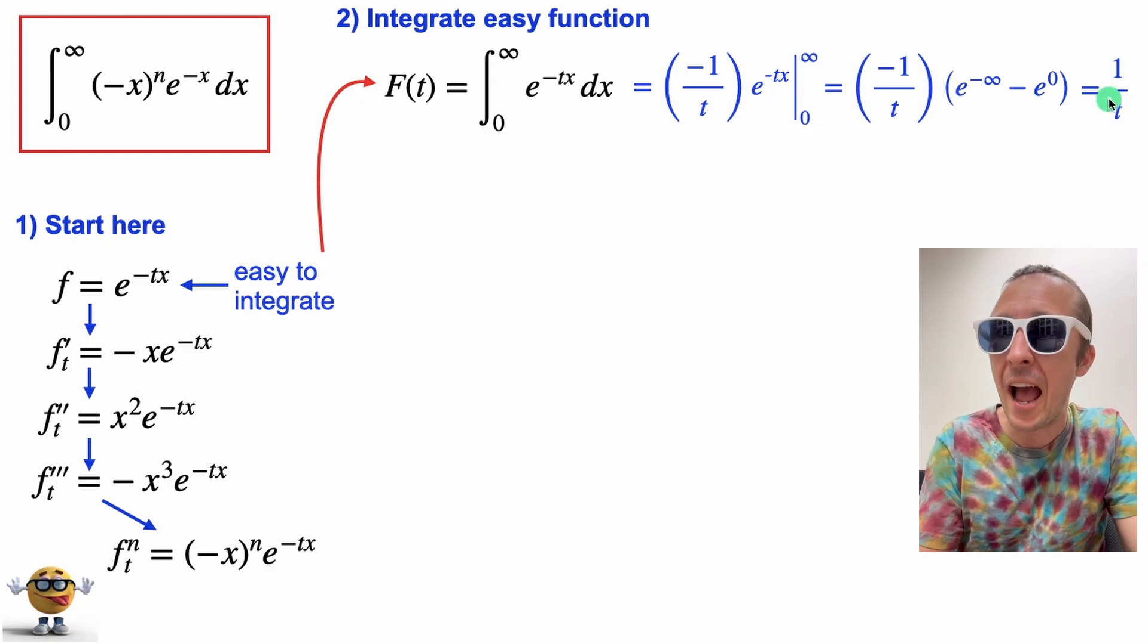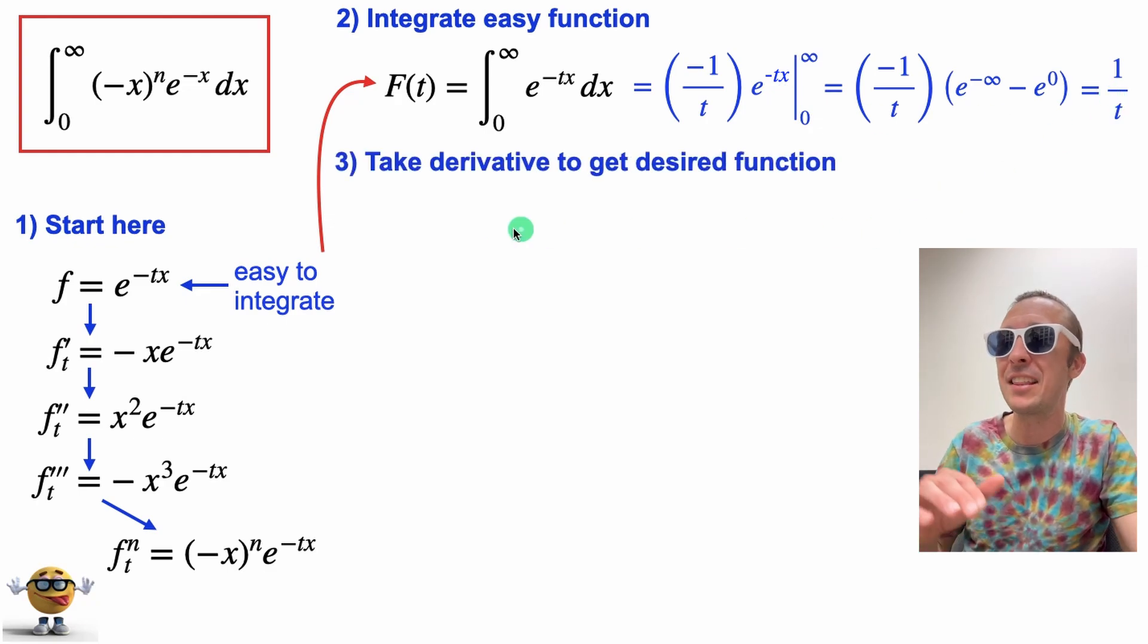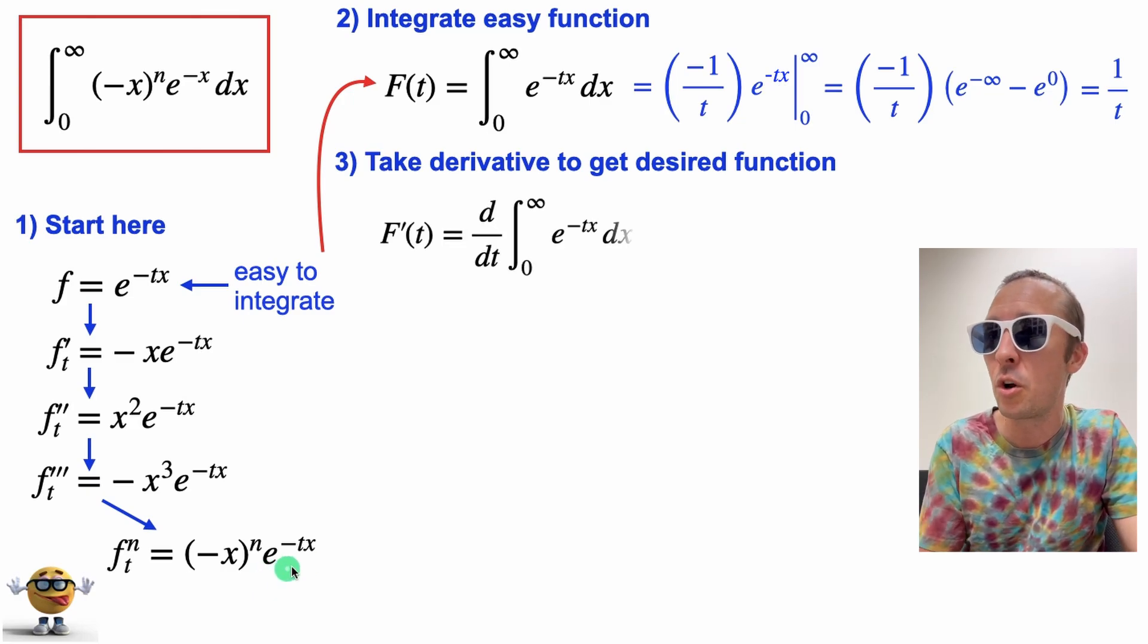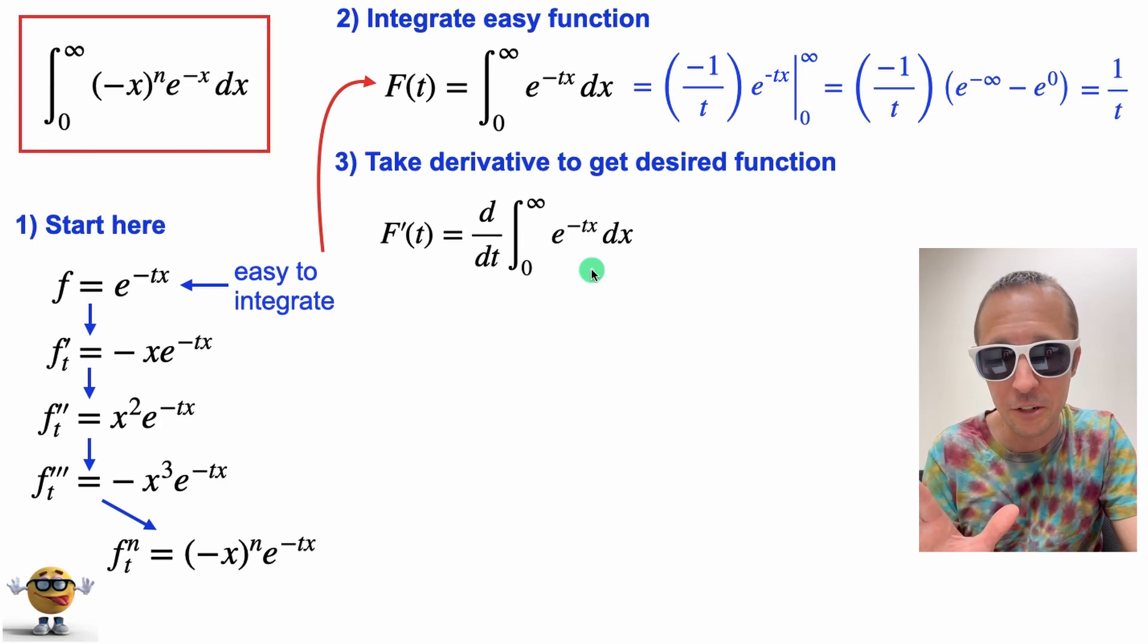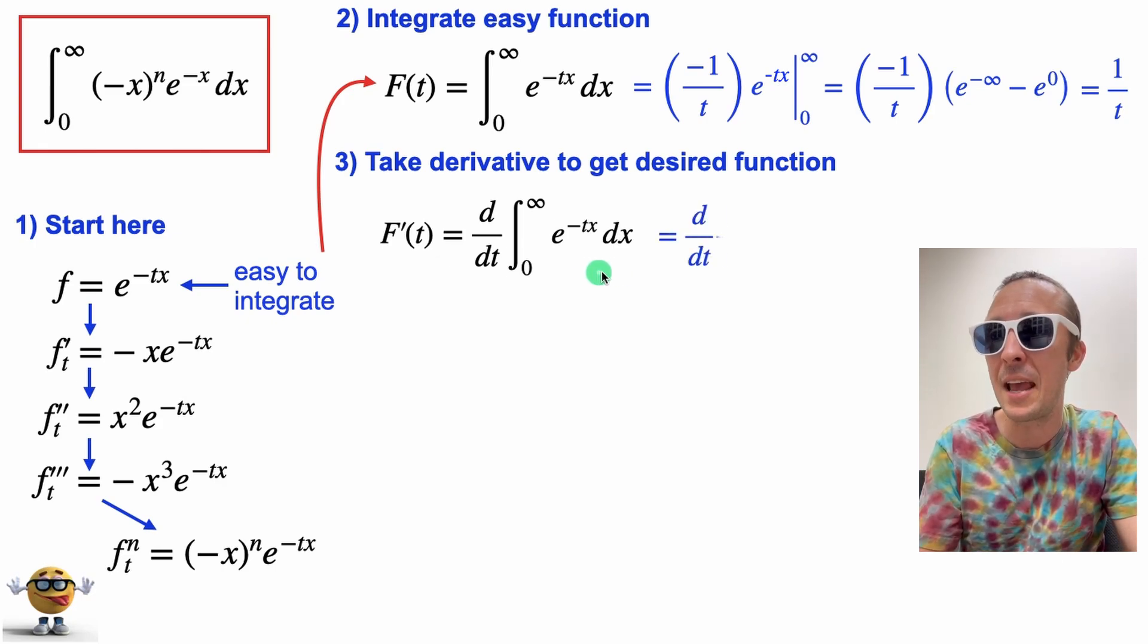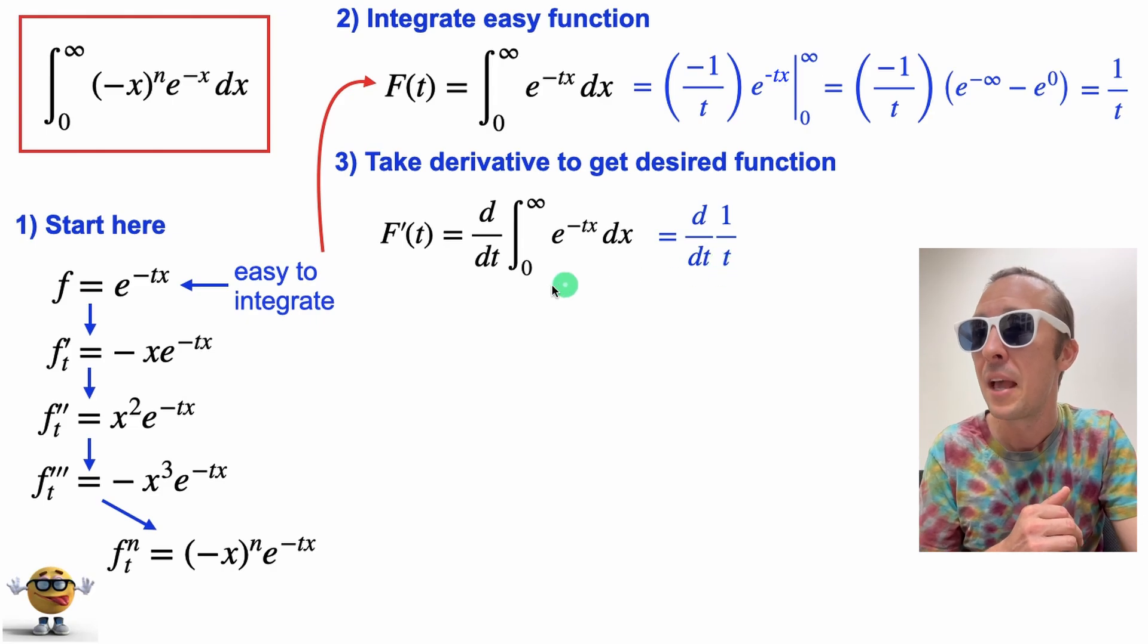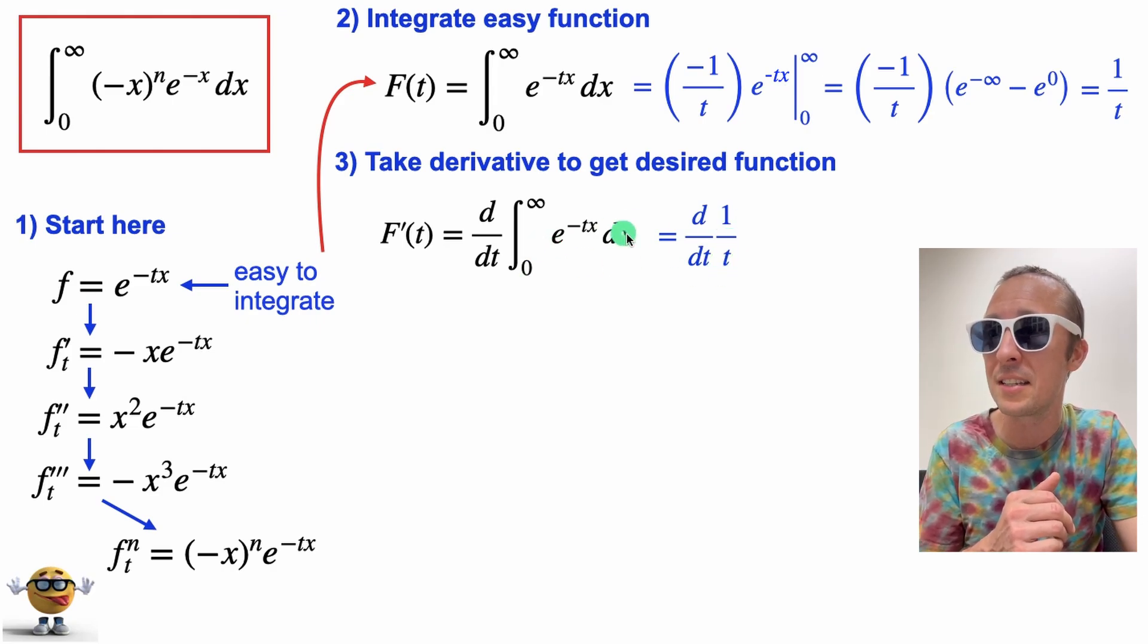Okay, so now with this in hand, we're going to take the derivative until we get our desired function. So we'll take the derivative of our integral, derivative of our integral, and that's going to be the same as taking the derivative of one over t. And this is the derivative with respect to t, because one over t is what this integral evaluates into. So these two are the same.